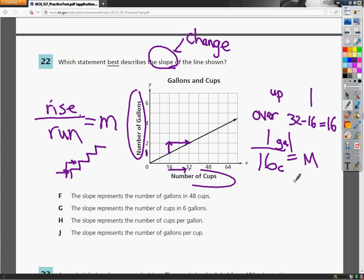Now F says the slope represents the number of gallons in 48 cups. The slope absolutely does not represent that. In 48 cups, the number of gallons is equal to three. So three represents that number. But the slope itself doesn't have anything to do with it. So F is out.